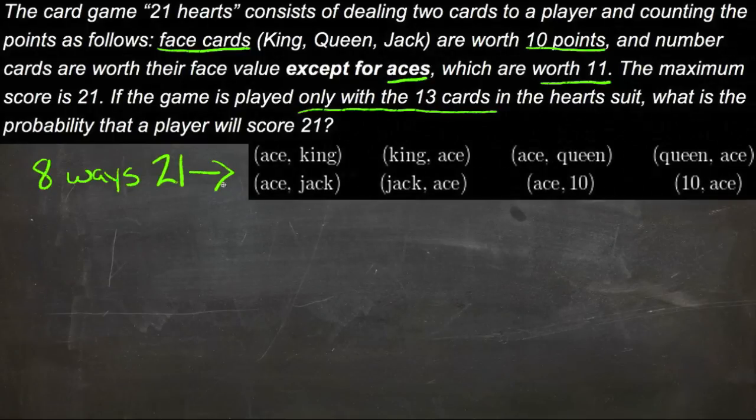If those 8 ways are the only ones that will get 21, to find the probability of getting one of those ways, we need to see what the total number of possibilities for card choices are.